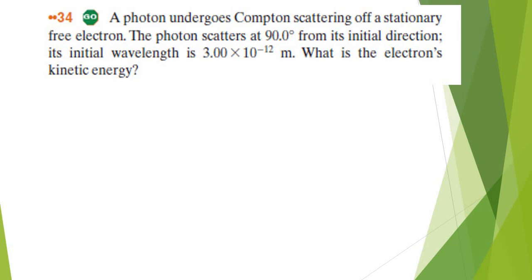So let's read the question real quick. A photon undergoes Compton scattering off a stationary free electron. You're going to want to highlight this stationary free electron. It may give you hints afterwards. The photon scatters at 90 degrees from its initial direction. Its initial wavelength is 3.00 times 10 to the power of negative 12 meter. What is the electron's kinetic energy?